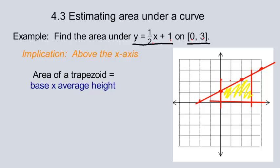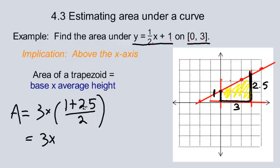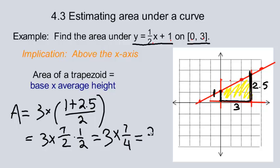Area of a trapezoid — I like to think of that as the base times the average height, as opposed to a rectangle which is base times height because the height never changes on a rectangle. The average height means take the shortest possible height, which in this case is 1, and the longest possible height, which is 2.5, since the function goes through (3, 2.5). So the area is base 3 times average height: 1 plus 2.5 is 3.5, which is 7/2, and dividing by 2 gives 3 times 7/4, which is 21/4 or 5 and one-quarter square units.